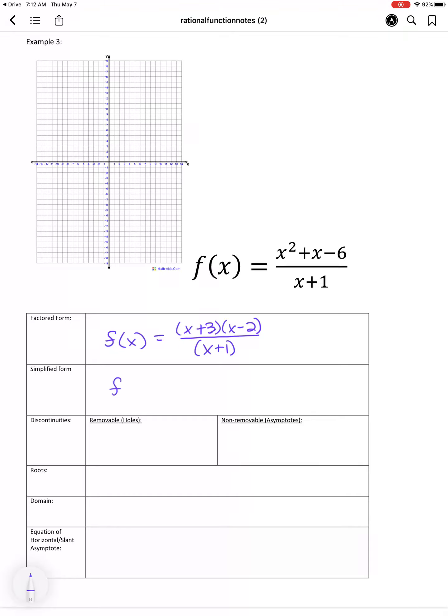The simplified form is exactly the same. There's nothing that cancels out. We don't have any removable discontinuities. There were no factors in the denominator that canceled out, but we do have one non-removable asymptote. We'll solve for x plus 1 equals 0. That's at x equals negative 1, so I'll go ahead and plot that one in.